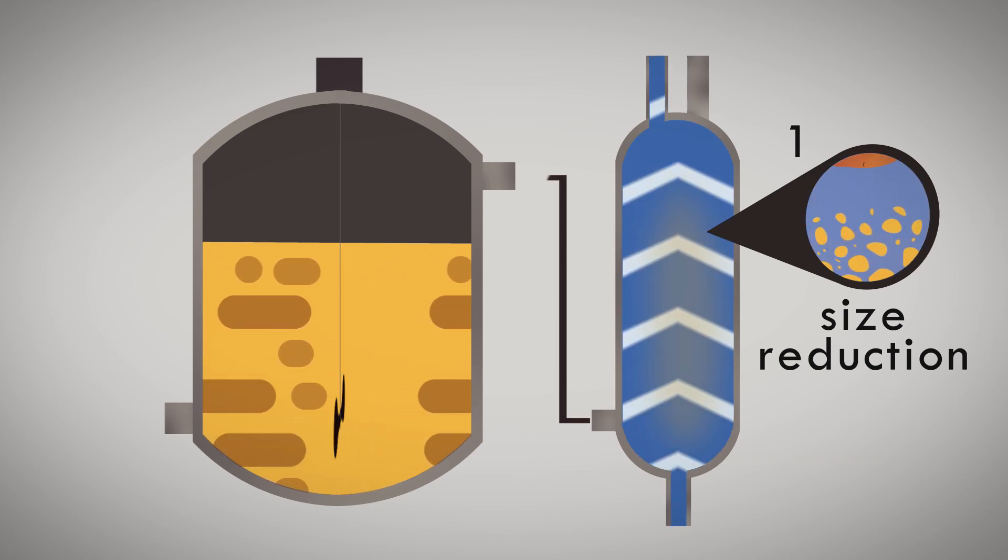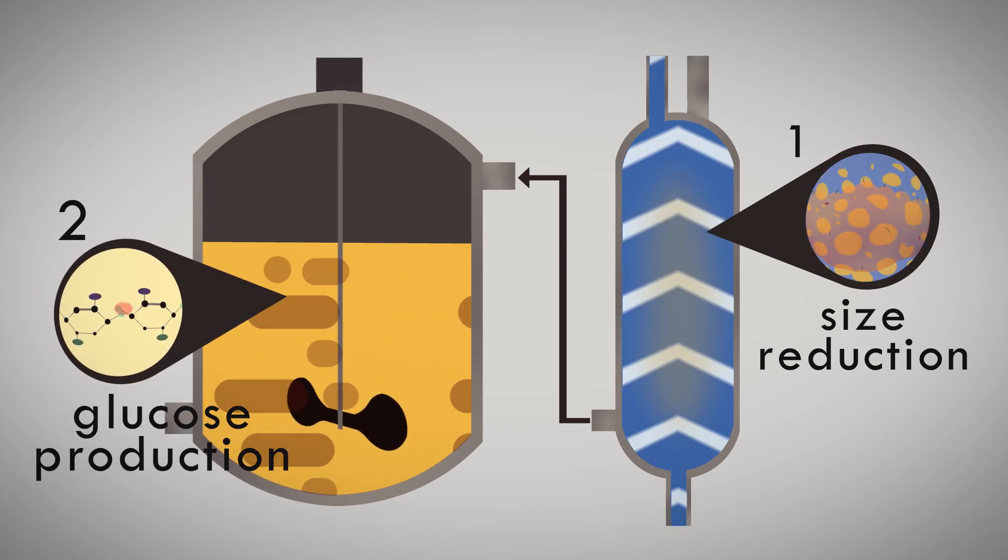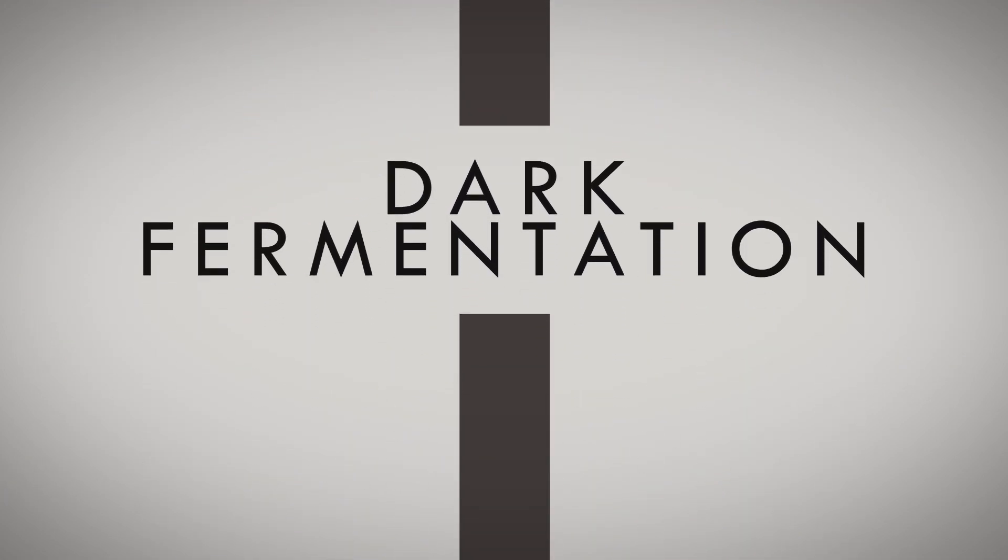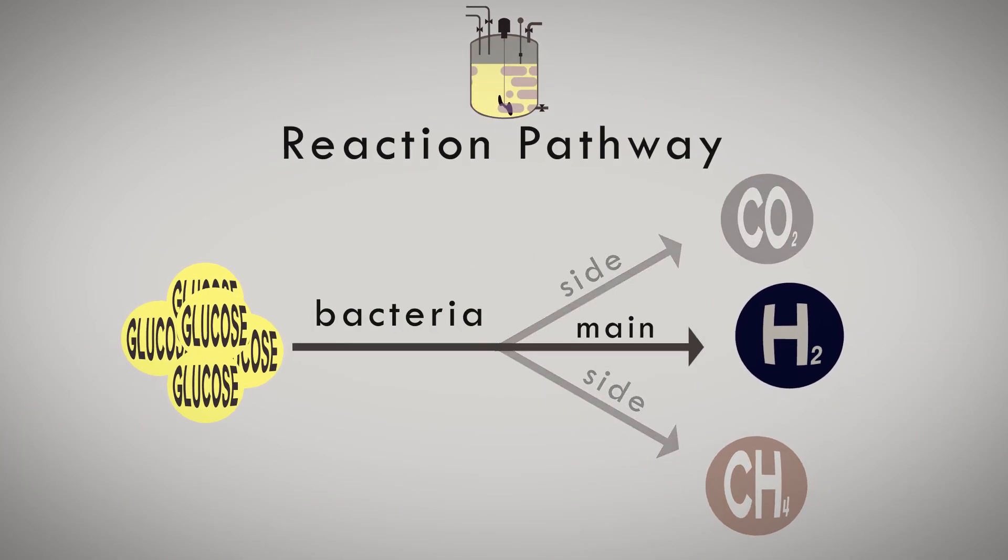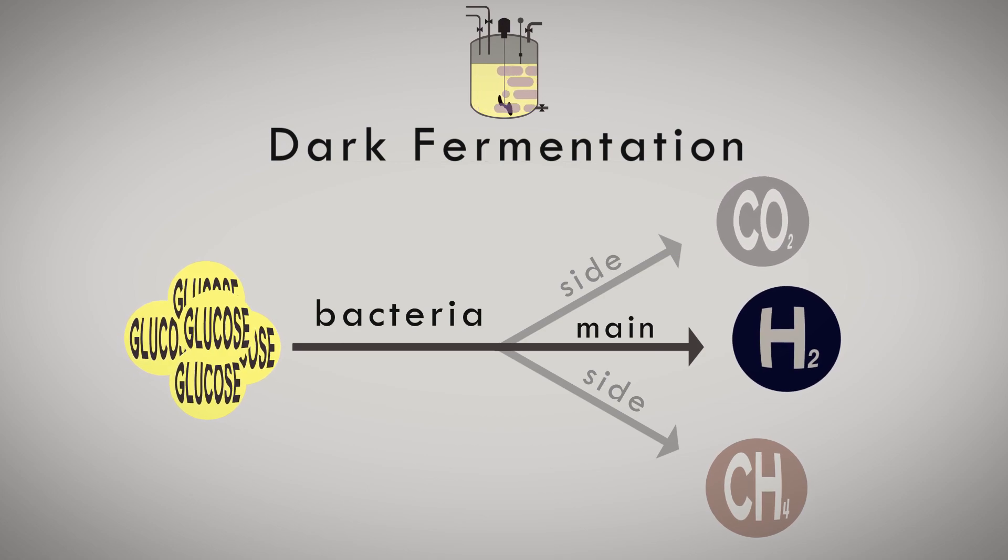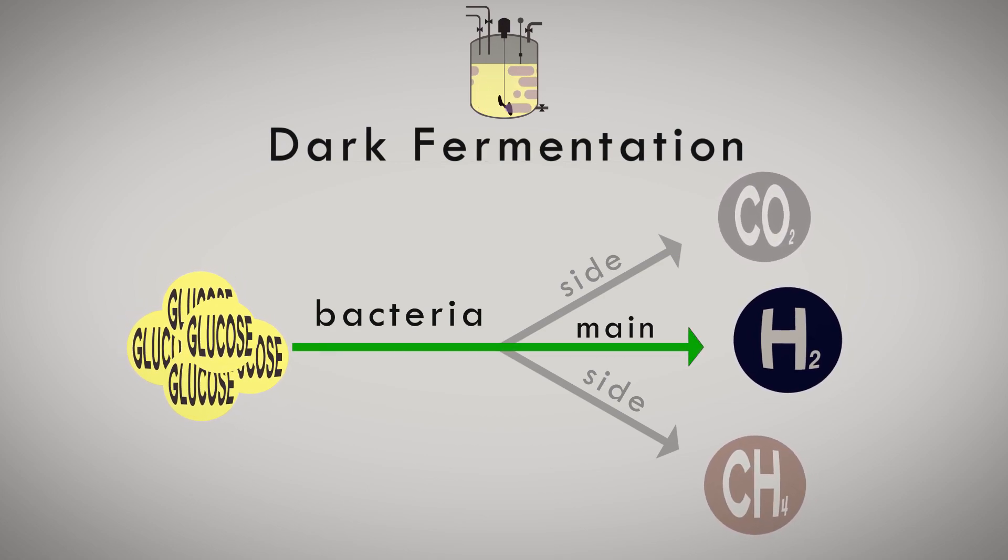biomass enters the bioreactors and reacts with bacteria to degrade glycosidic bonds to glucose. The methanogenic phase of the resulting glucose is inhibited towards the formation of methane and carbon dioxide through the fermentation process in order to obtain the direction of the reaction towards hydrogen formation.